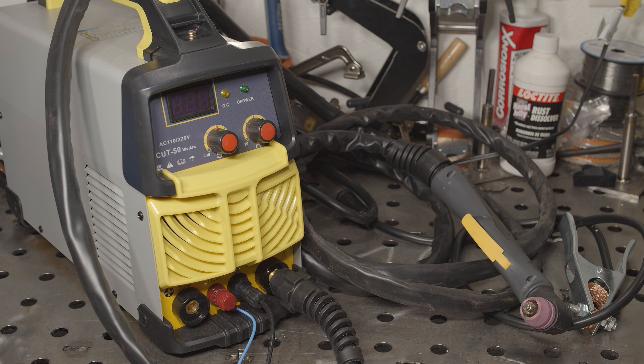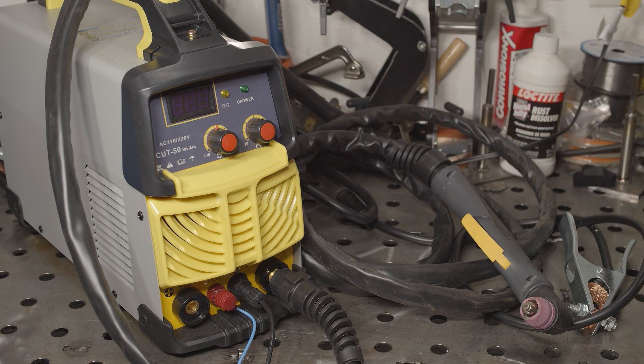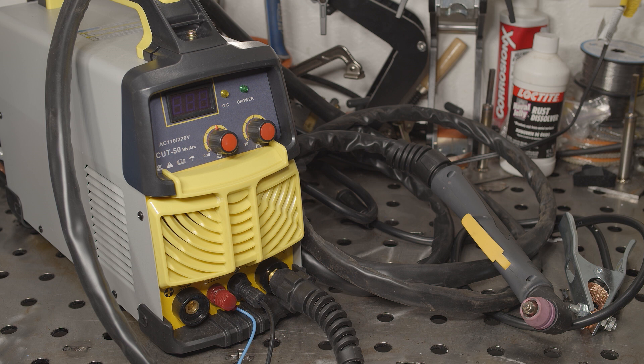All right, before we get into the performance, for context, I have previous experience with a Hypertherm PowerMax 30XP, so I will be making comparisons to that. I realize they are dramatically different price levels, but that's what I have experience with, so that's my point of comparison. Obviously, price has to be taken into account, and this Cut50 is only $275, so keep that in mind. Also, I know that clean, dry air is important for a plasma cutter, and the 30XP was always used with the same compressor and air system that I used for this machine.